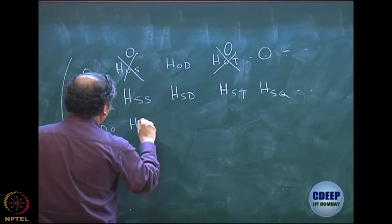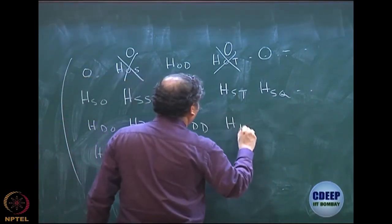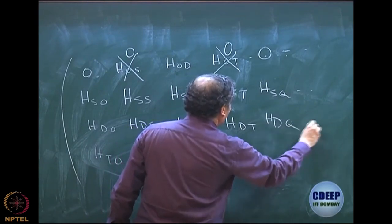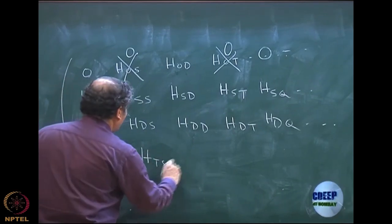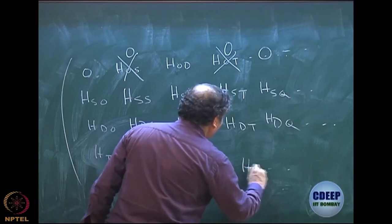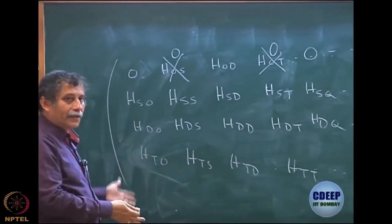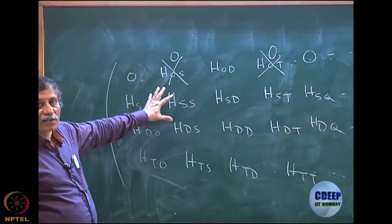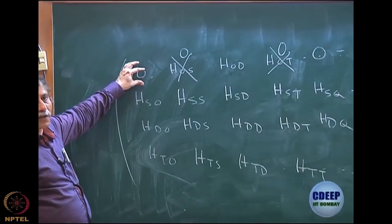Similarly, doubles with Hartree-Fock, doubles-singles, doubles-doubles, doubles-triples, doubles-quadruples and so on continue. Then you have triples-singles - it is just filling the matrix. So this is your diagonal triples-triples and so on. Depending on how many you take, your matrix can be written in a block form. This is the only block which is one-dimensional, which is Hartree-Fock to Hartree-Fock; the rest are either rectangular or square.